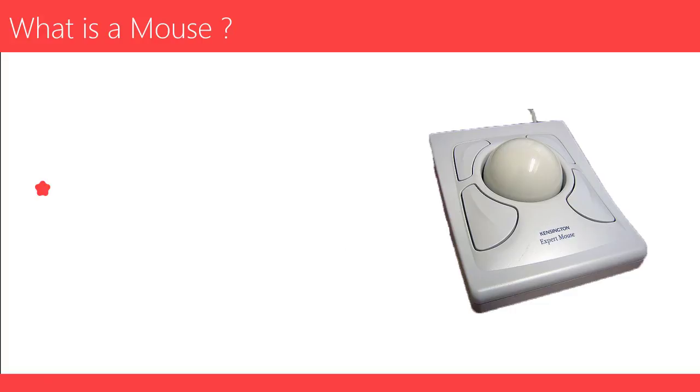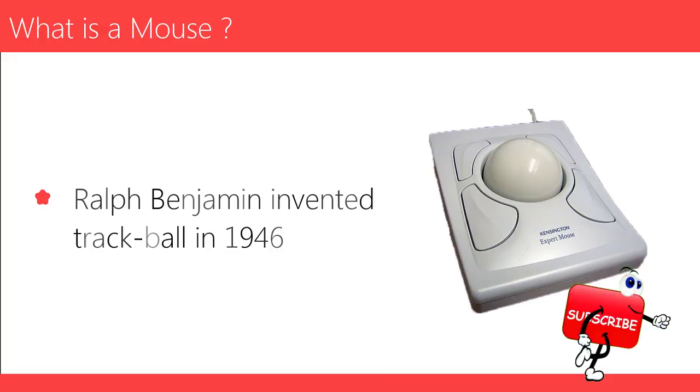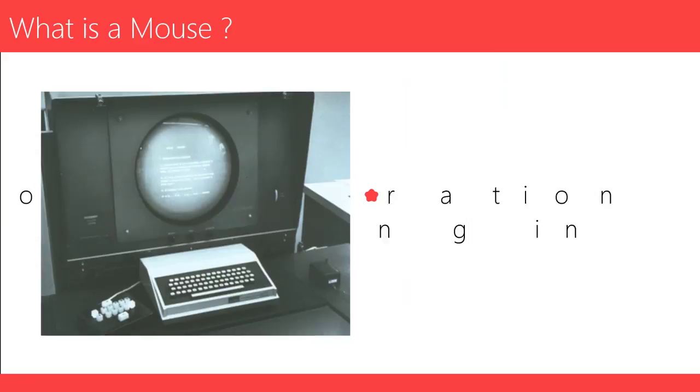A trackball is a related pointing device was invented in 1946 by Ralph Benjamin. The first public demonstration of a mouse controlling a computer system was in 1968.